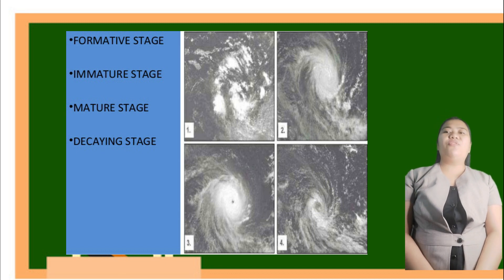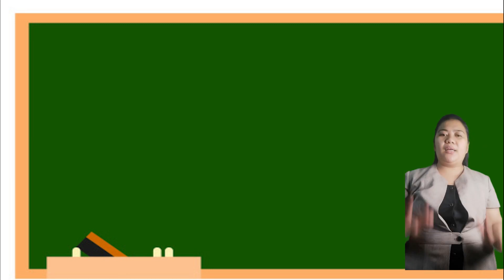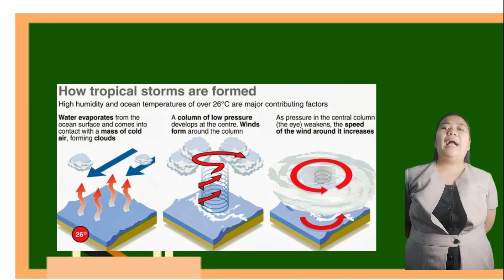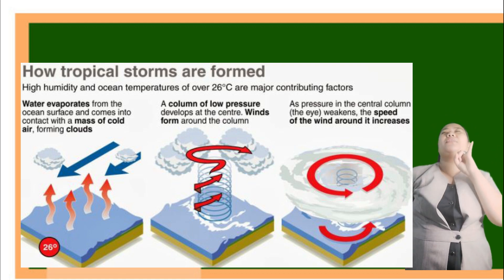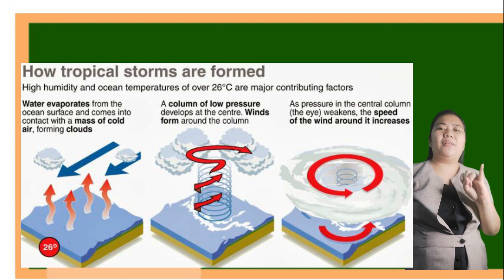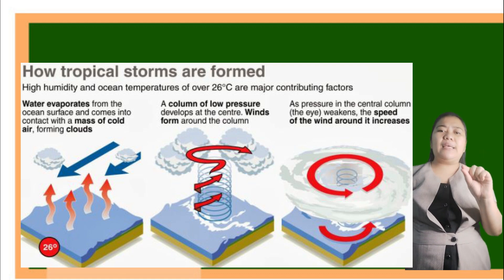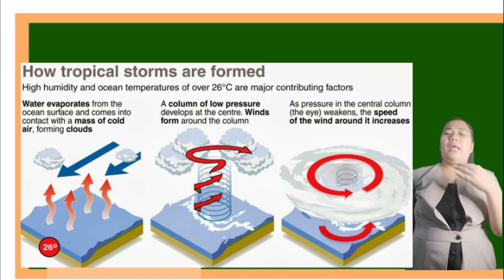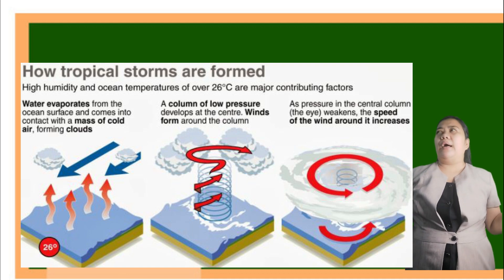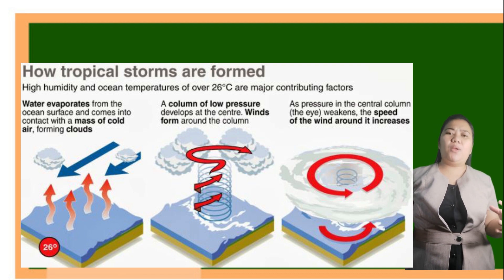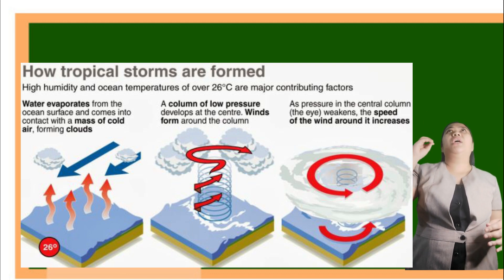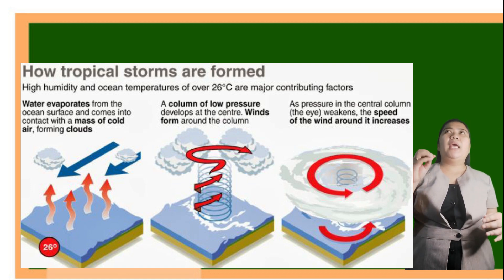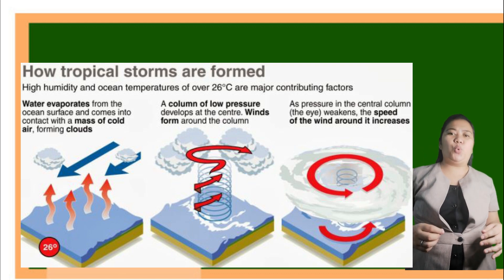A tropical cyclone starts to form when specific conditions are met. First, there must be a tropical ocean — meaning it should be warm, humid, and hot. Specifically, the temperature should be 26 to 30 degrees Celsius. These oceans are also large, which means a lot of moisture can be collected from this tropical ocean, forming a large low-pressure area. If the ocean temperature is lower than 26 degrees Celsius, a tropical cyclone will not form, since that temperature is needed to warm the sea surface and evaporate water.